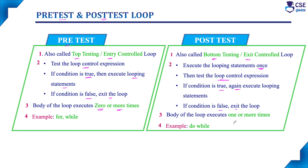In a post-test loop, by default the body of the loop executes one time. So the minimum execution of the body is one time. As long as the condition continues to evaluate to true, it will execute more times. Therefore, the body of the loop in a post-test loop executes one or more times.